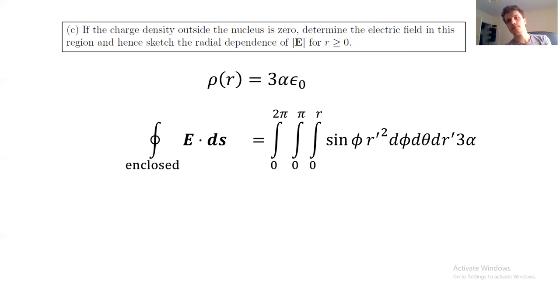So from the divergence theorem, we use an integral over a closed surface, in this case a sphere. You follow the steps below and the final answer is alpha A cubed divided by R squared.